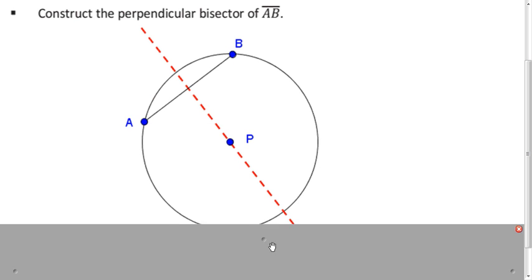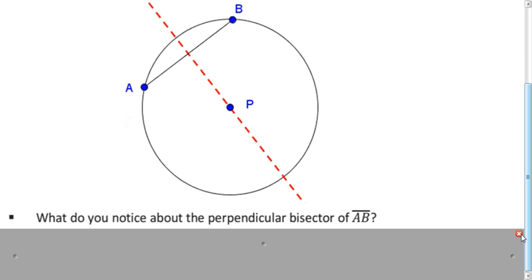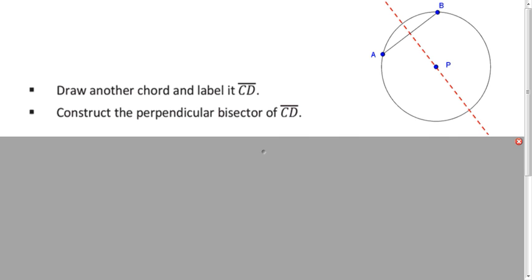So hopefully you have a picture that looks something like this, and this dashed red line is my perpendicular bisector. What do you notice about it? Well it passes through the center P. Was that a coincidence?